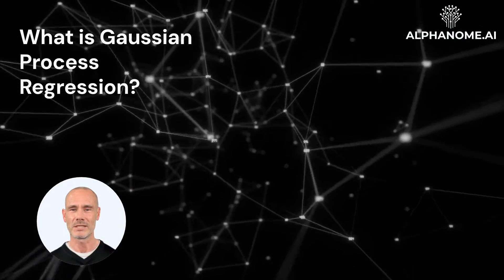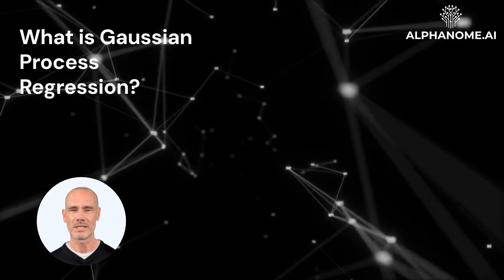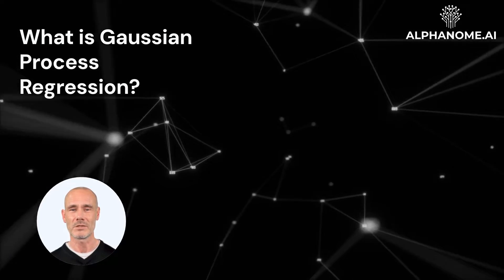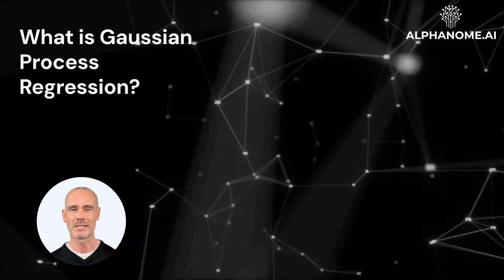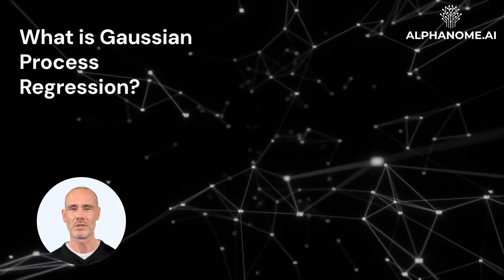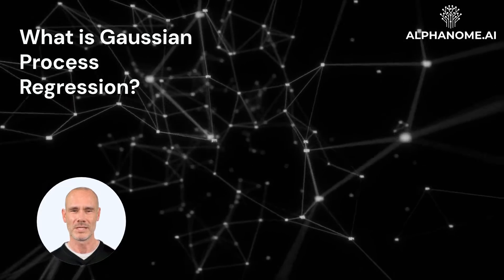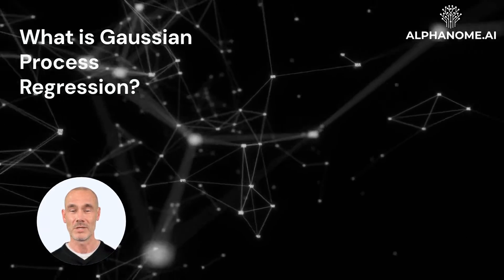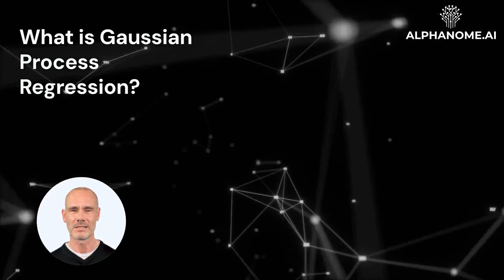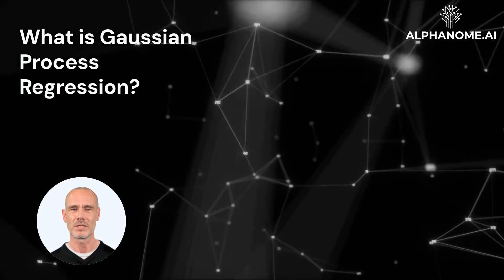What is Gaussian Process Regression? GPR is a non-parametric, probabilistic modeling technique used for regression analysis. Unlike traditional regression methods that assume a specific functional form for the data, GPR treats the underlying function as a Gaussian process, which is a collection of random variables with a joint Gaussian distribution.